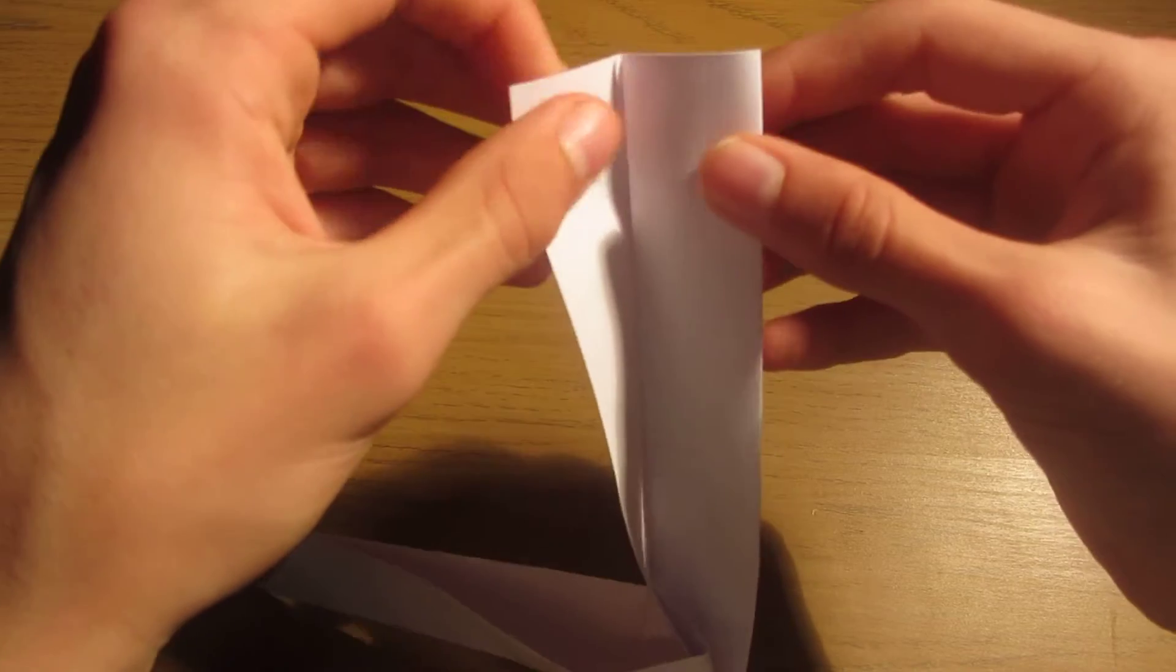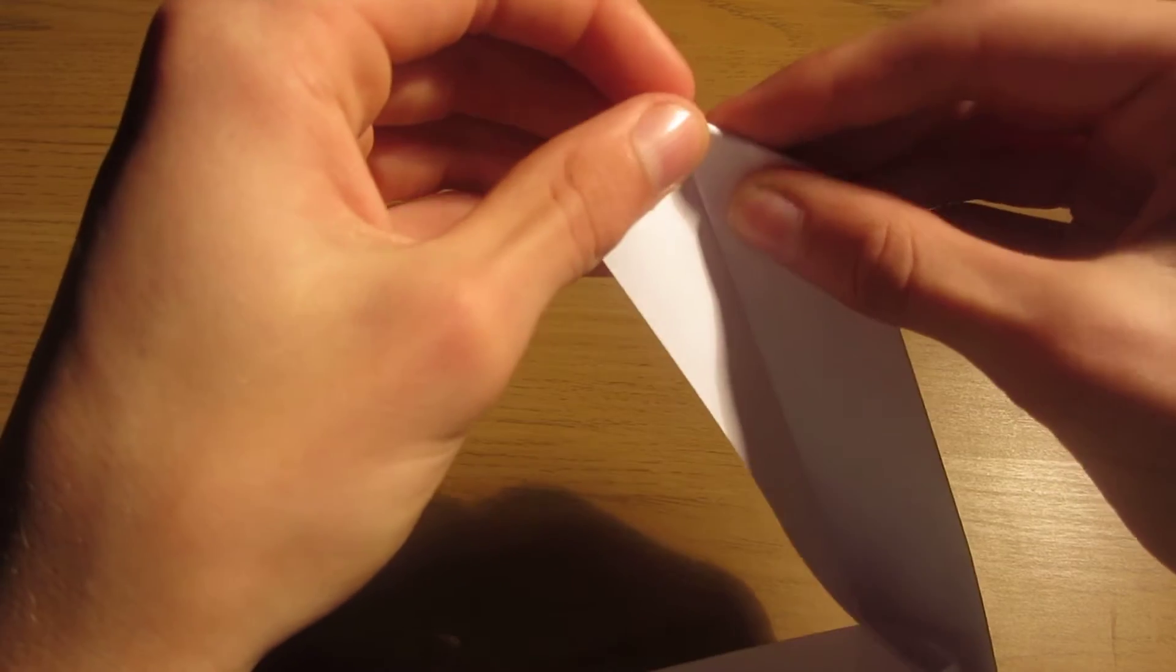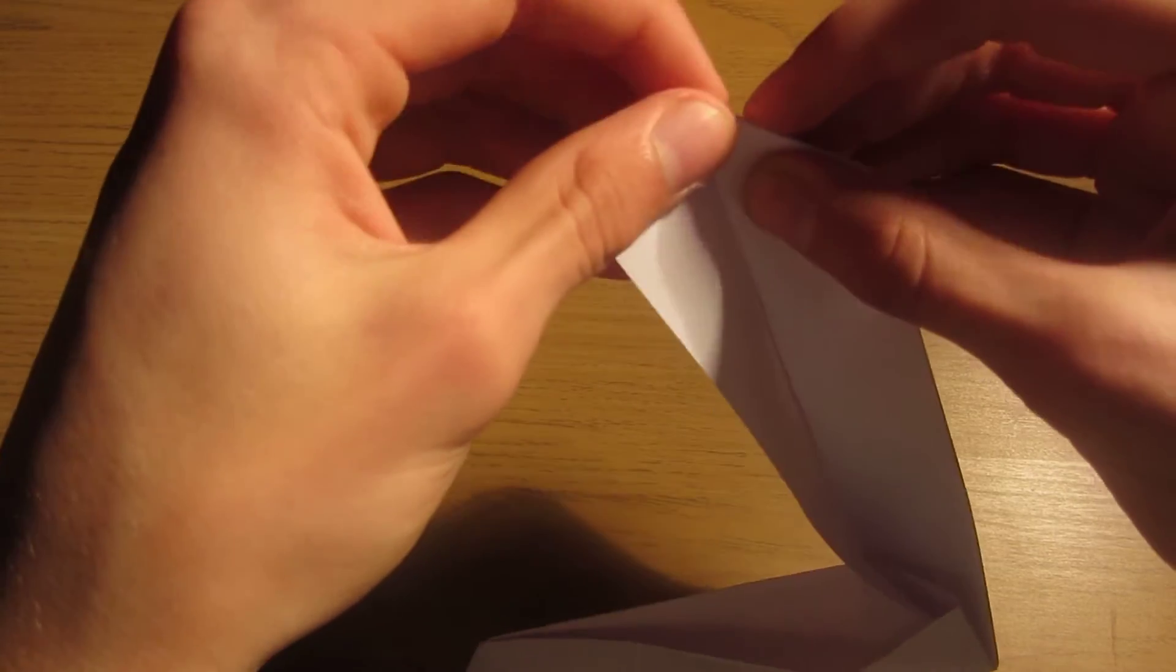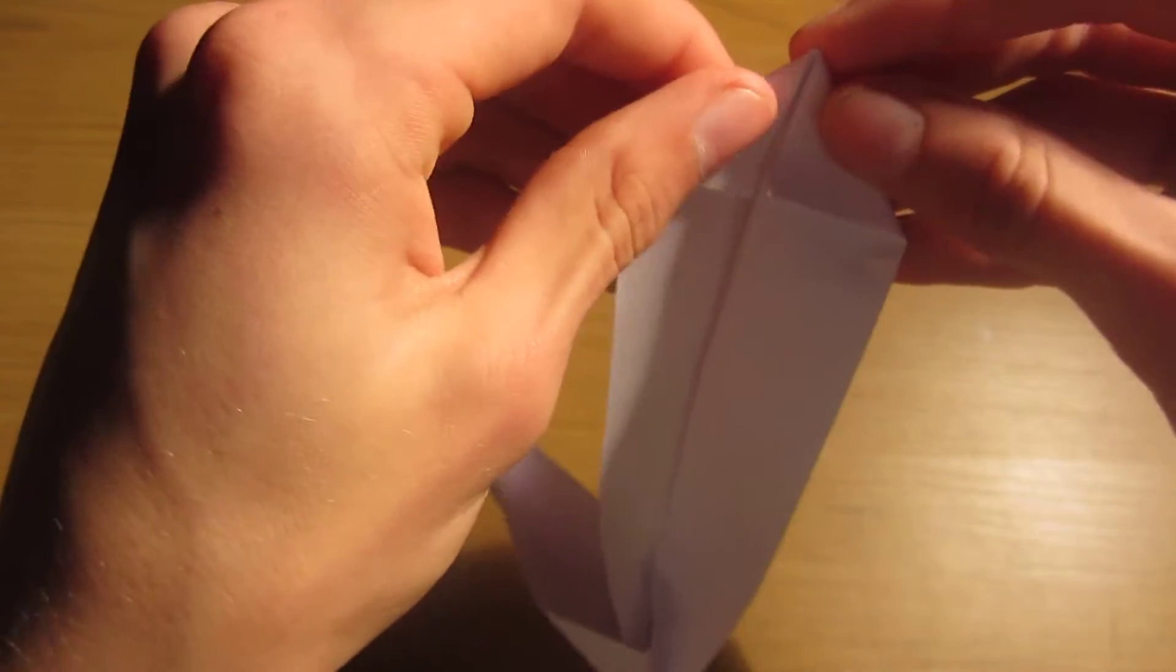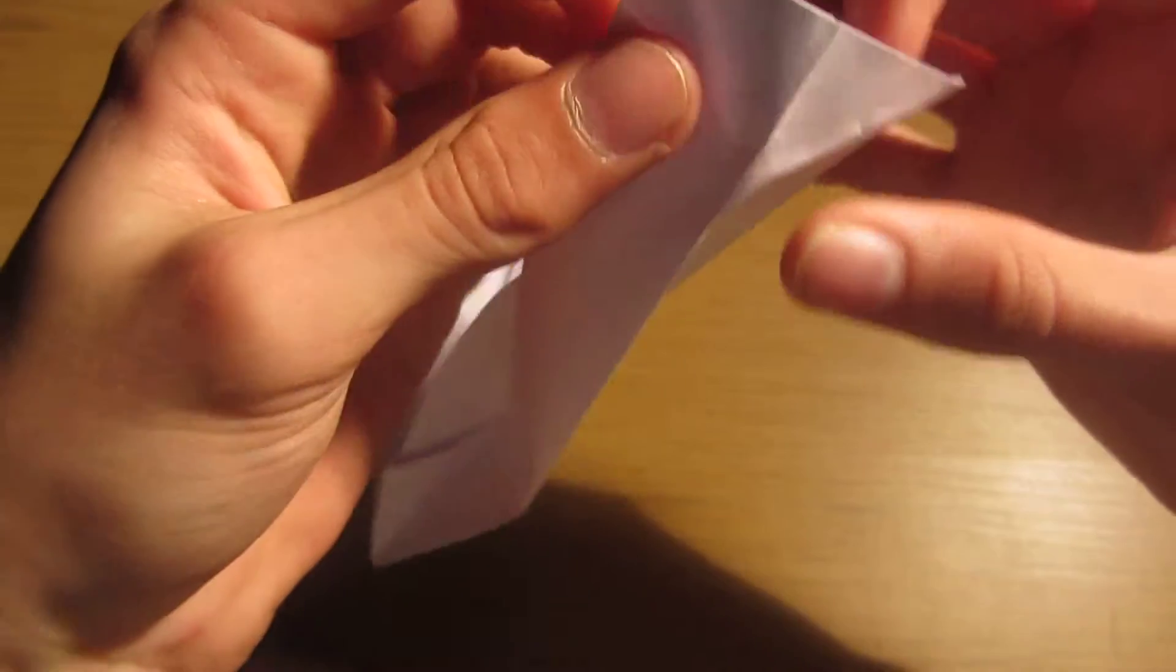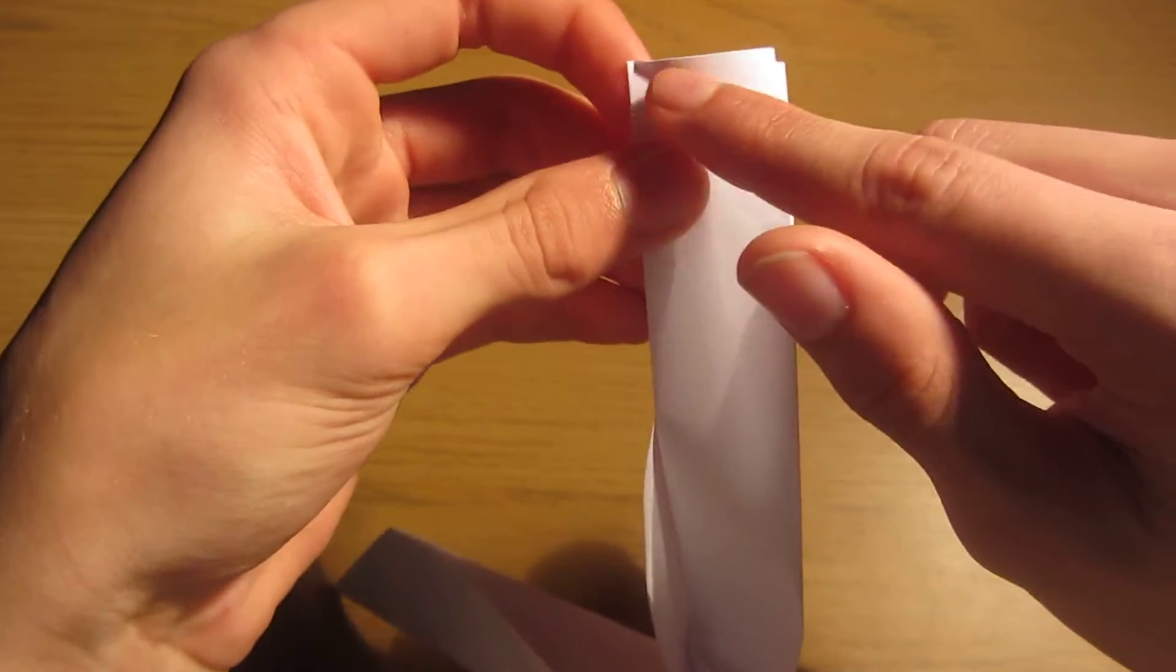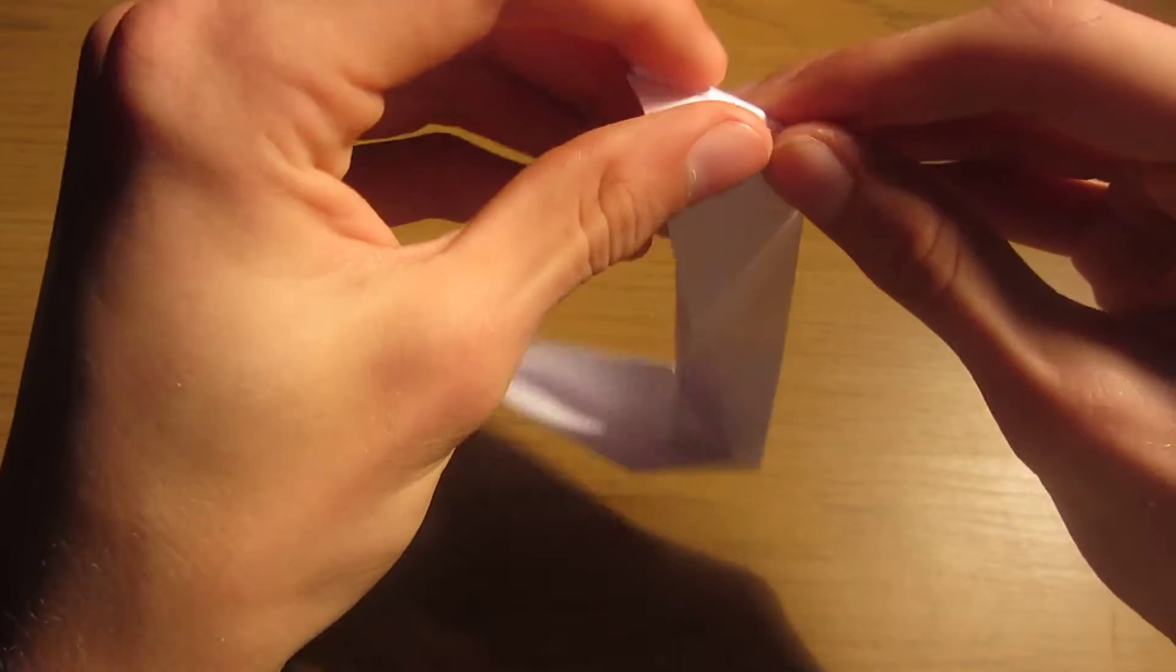And we're going to do the exact same to this flap. But this one's only got one layer here. So we're going to fold down this corner. Like this. Sorry about my dogs, they bark all the time. So we've got this corner down. And then we do this one. And then open this up. And then mountain fold along both these lines. Like that.